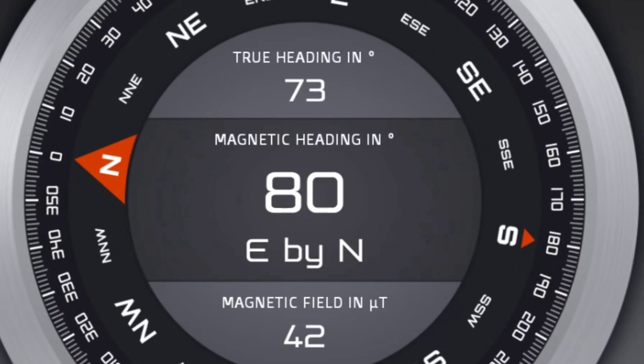Now I'm going to switch it over to a compass. Now I have it on compass. Now I'm walking toward the sun, straight toward the sun. So it's between about 75 and 80 degrees.